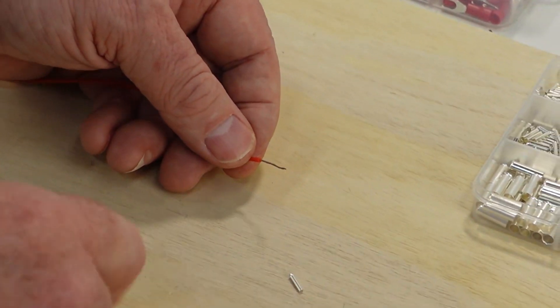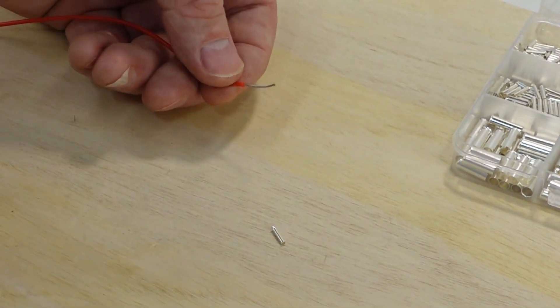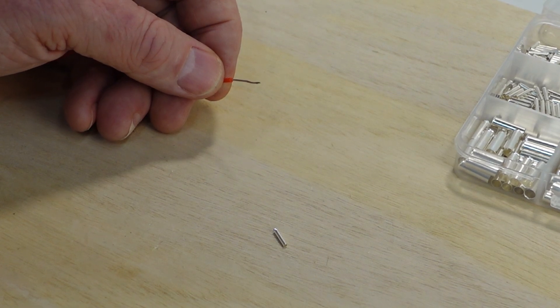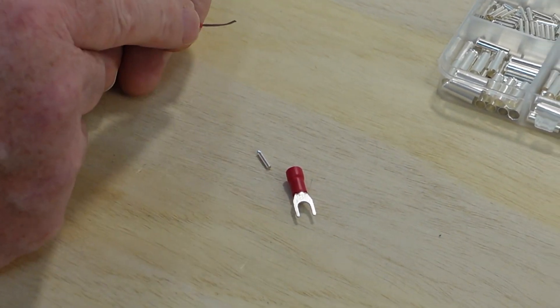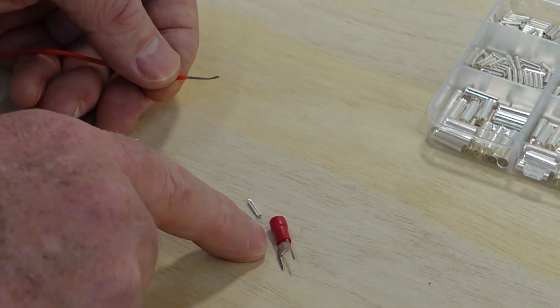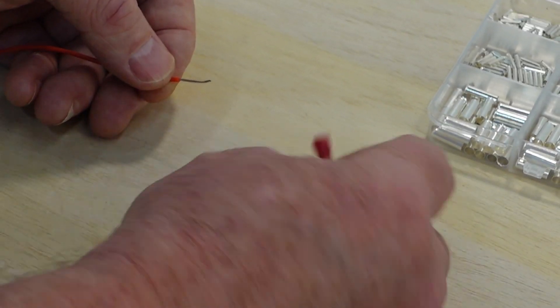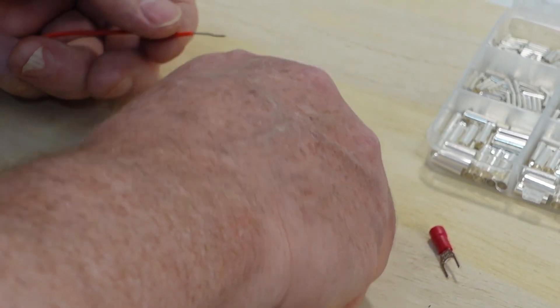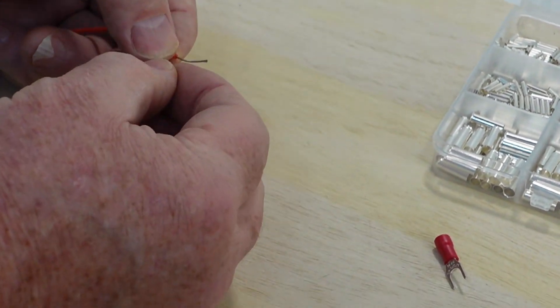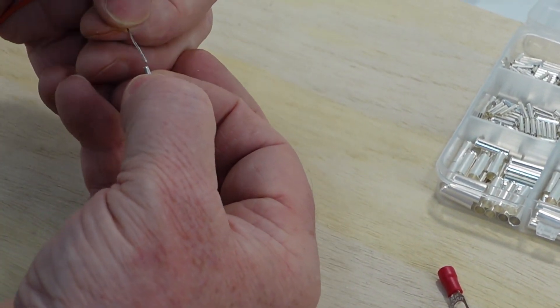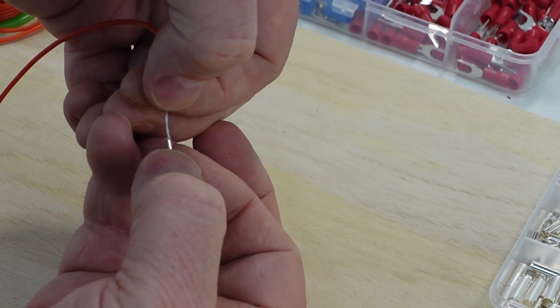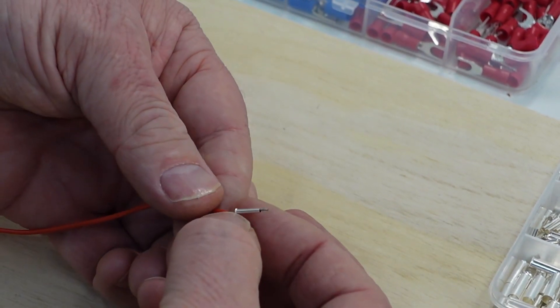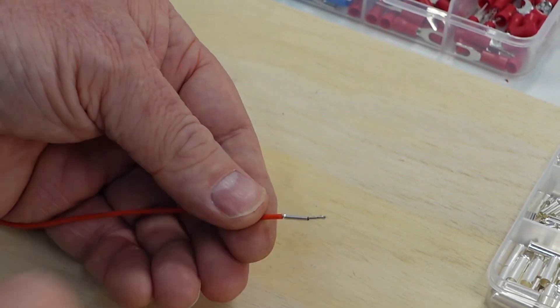Now with the ferrule, just choose the right size. Remember the ferrule has to fit into the barrel of the connector. So just make sure you use a ferrule that will crimp on the wire decently and will also fit into the connector barrel there. So we just chose this size here. And then with the twisted wire, it's kind of like threading a needle. There it goes. So that's what that looks like.